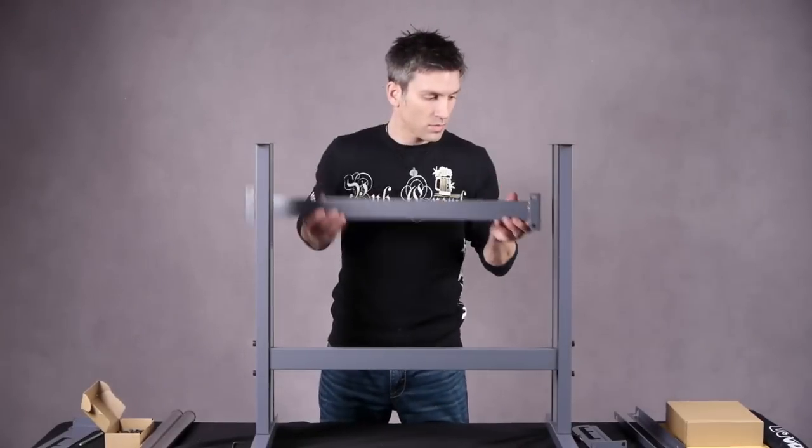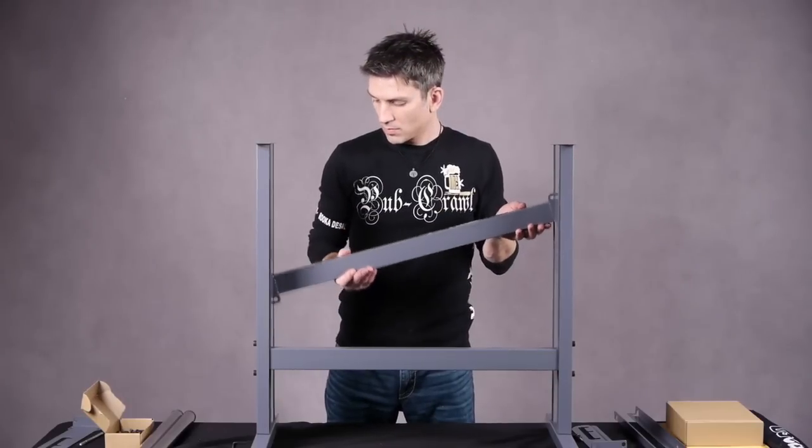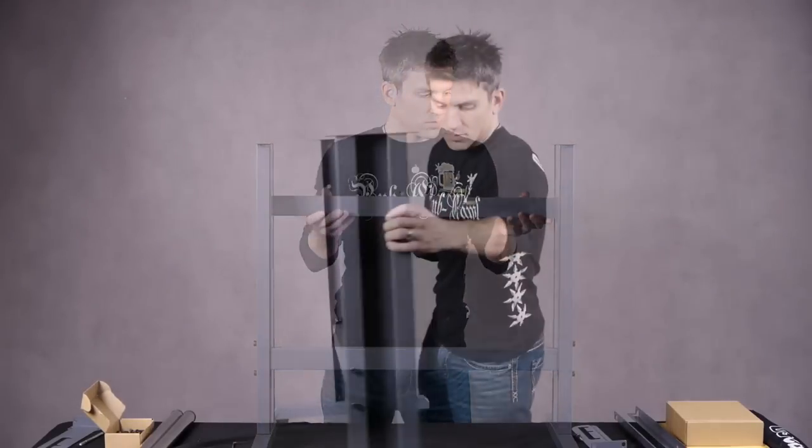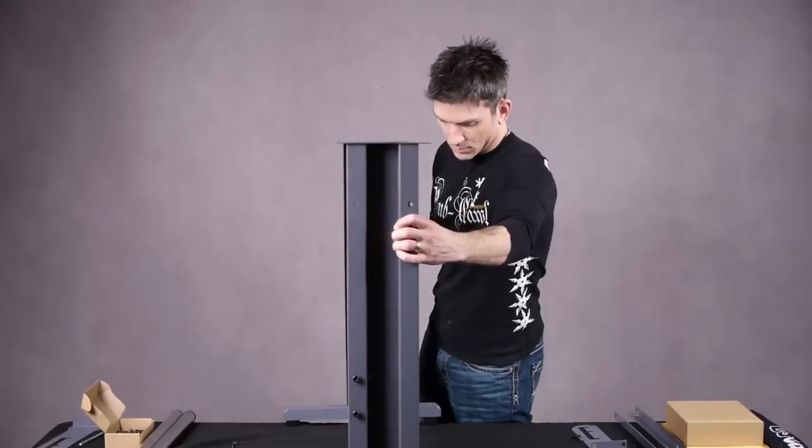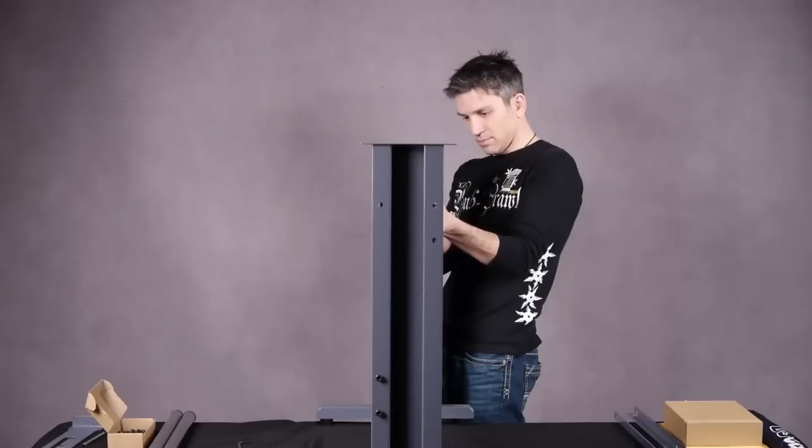Next we're going to do the same for the upper cross beam, but we're not going to set the nuts on the bolts just yet, because we also have to attach the material roller bar brackets as well as the media catch basket brackets.